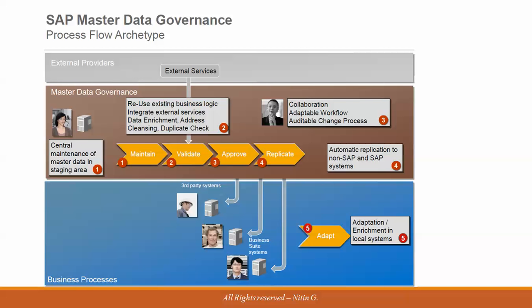At a high level, the MDG process flow begins with central maintenance of master data in a staging area where data is initially stored. The system then reuses existing business logic, integrates external services, performs data enrichment, address cleaning, and duplicate checks. Validation occurs to identify duplicates or errors, the system cleanses the data, and it then proceeds to the approval workflow.